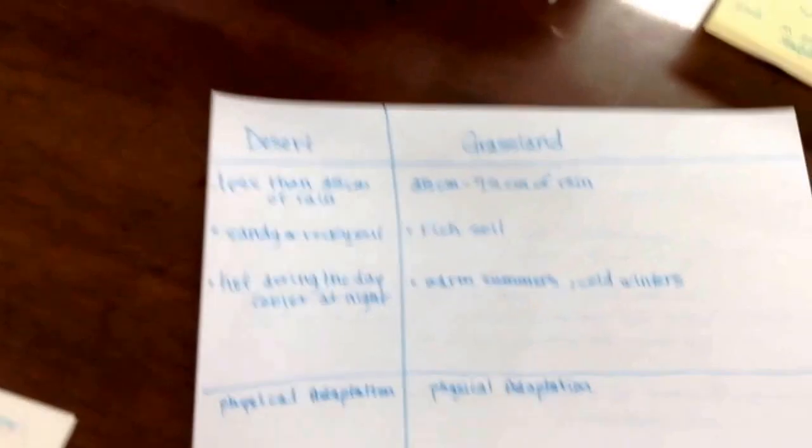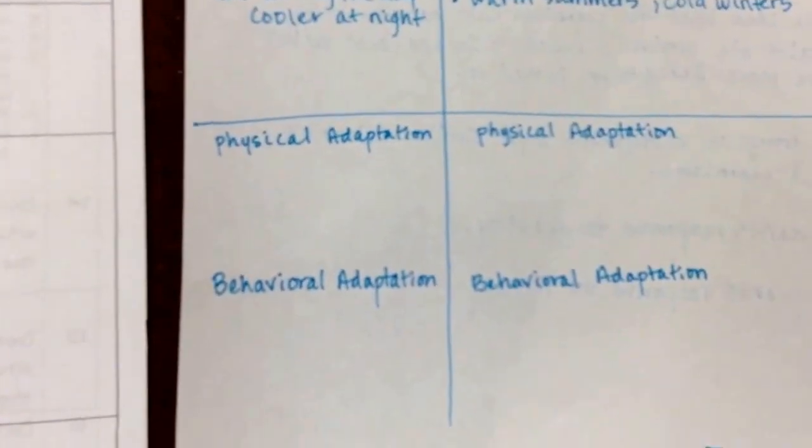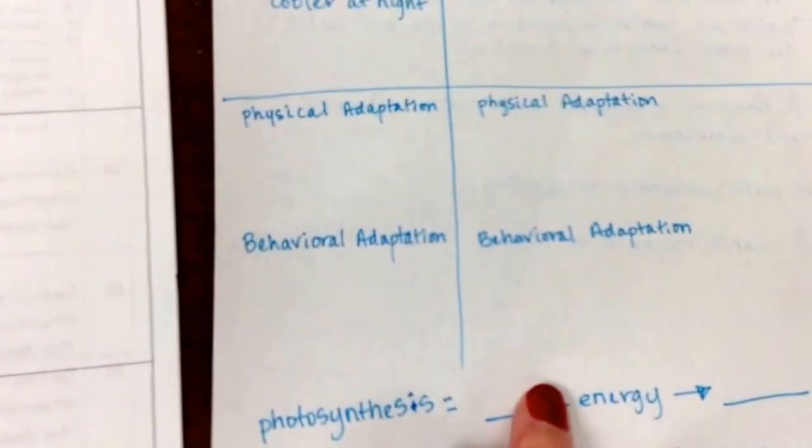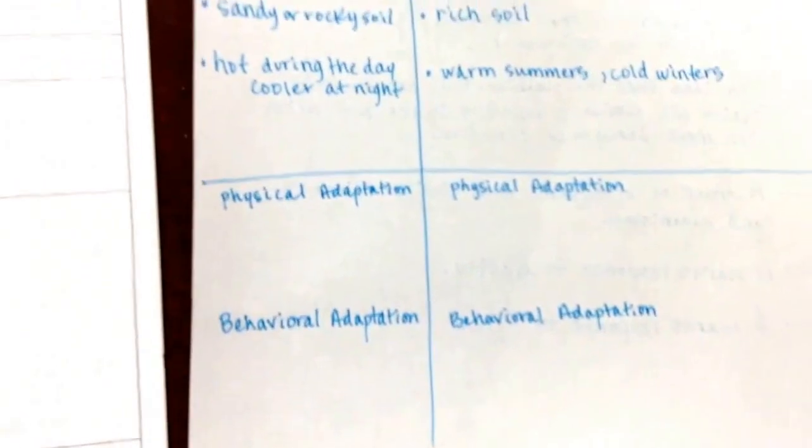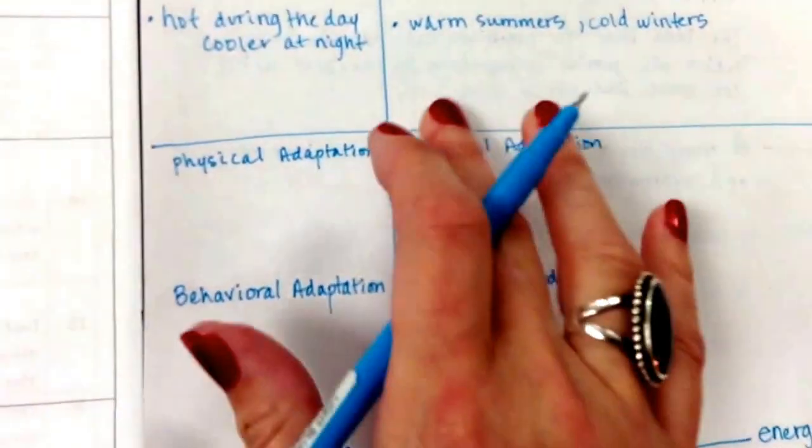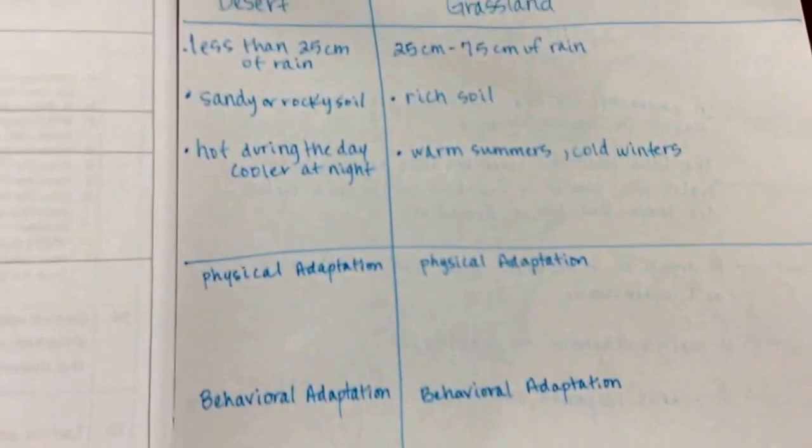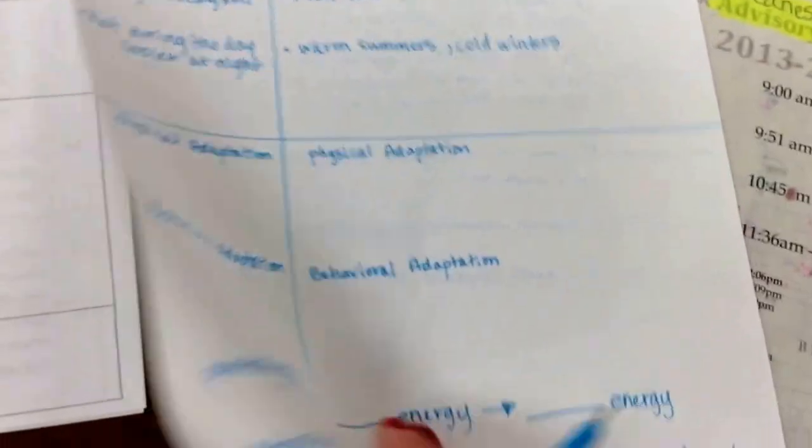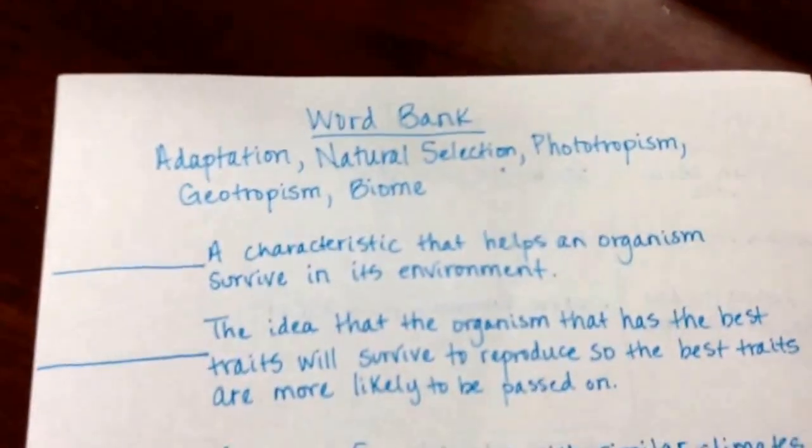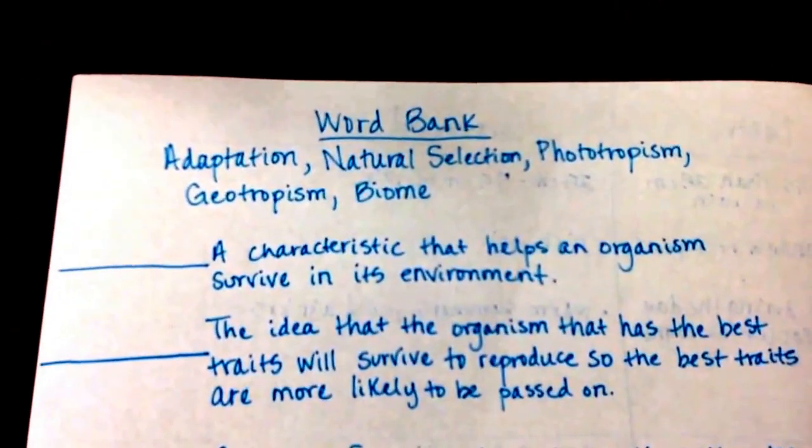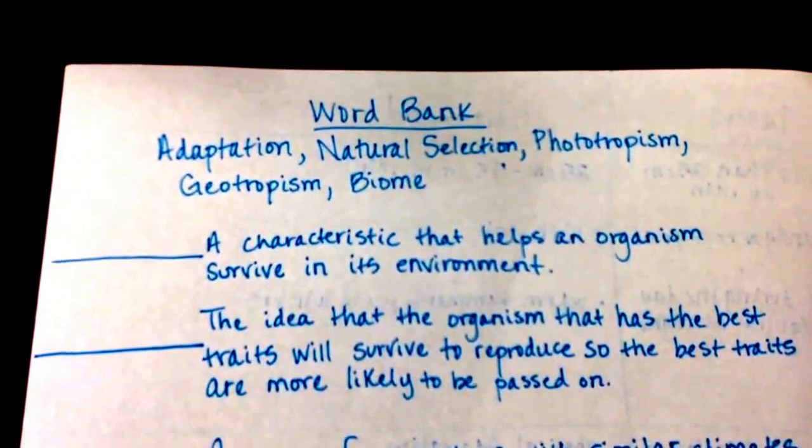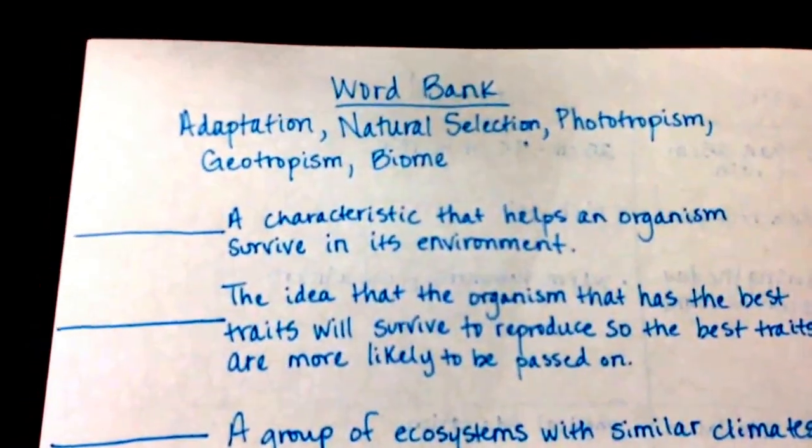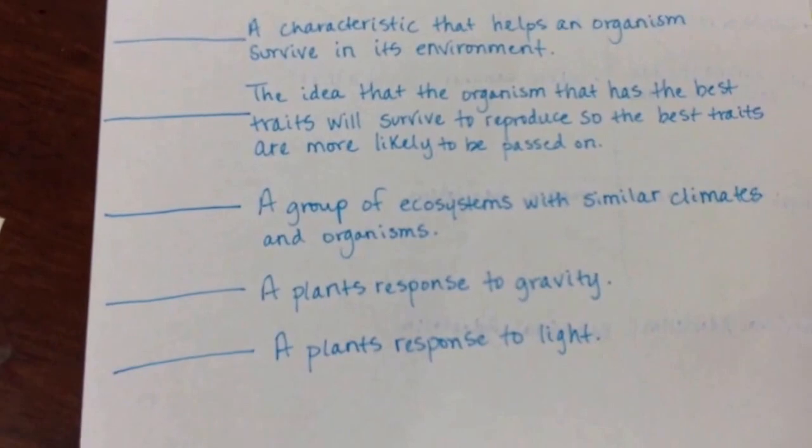All right, that gives us a start where we need to be for characteristics of the desert versus the grassland. Now let's talk about adaptations. But first I think we need to put a definition with adaptation. There's some key words in this unit that we probably need to go over first. So let me turn this over and I gave you a little word bank to look at right here. Our word bank includes adaptation, natural selection, phototropism, geotropism, and biome.